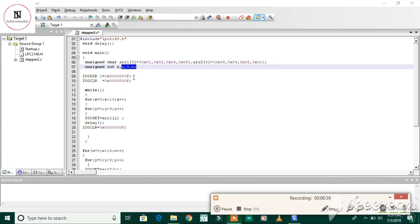We have used the first four bits of port 0 as output. That's why we have written io0dir is equal to 0x00f at last. And we have initially cleared the bits.